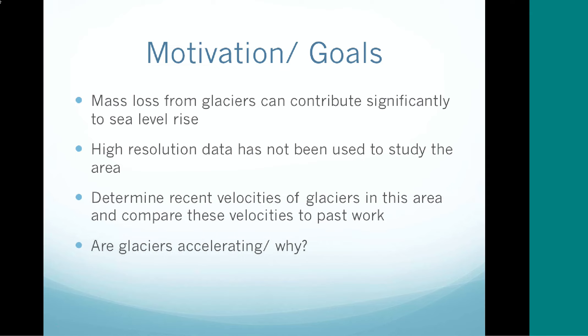The area has been studied before, but the data is not quite as high resolution as what we have now. The satellites we used were about one meter per pixel, and past data on the area is about 15 meters per pixel, so there have been significant developments in that technology. We also have data from 1995 that I'm going to compare to my data, which was taken from about 2011 through 2013. Using these changes in velocity, we can determine if the glaciers are accelerating over time.